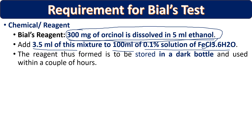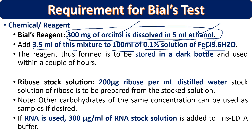Ferric chloride is also required in the reagent. The prepared Bial's reagent must be stored in a dark bottle and used within a couple of hours. The second reagent is a stock solution of ribose sugar prepared at 200 micrograms per ml in distilled water. For RNA testing, prepare RNA at 300 micrograms per ml in EDTA buffer, and dilute according to requirement.